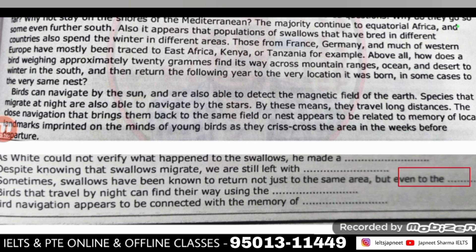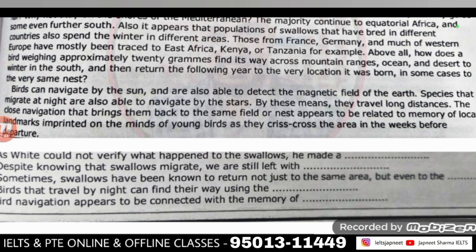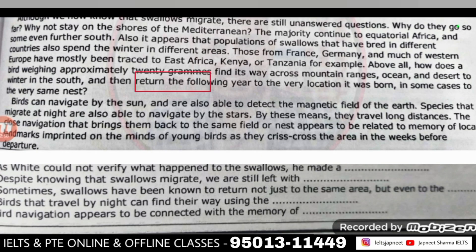Q3: 'Sometimes swallows have been known to return not just to the same area' — कई बार क्या होता है, swallow जो होती हैं उनको जाना जाता है कि वो सिर्फ अपने area में ही वापस नहीं आती — 'but even to the dash.' Area में तो लोग वापस आती हैं, लेकिन और किस जगह पे वापस आती हैं? यह रहा last line में — 'and then return the following year to the very location it was born in, some cases to the very same nest.' That means to a very particular area, particular home — जो nest पे करा है वहाँ पे।